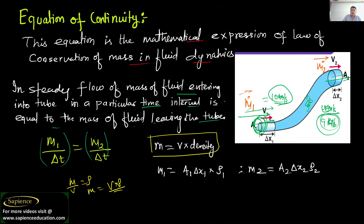Whatever mass is entering at a particular interval — for example, for 1 second mass entering is 1 kg — so 1 kg must come out at the outlet. Or if 5 kg of mass is entering per second, then at the outlet this mass should come out as 5 kg per second. Mass is equal to volume into density.